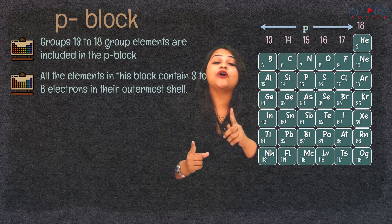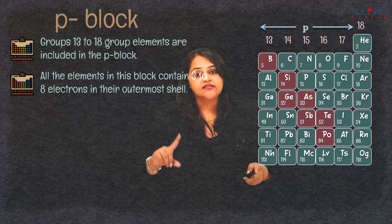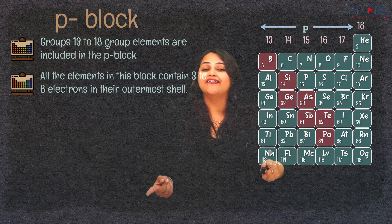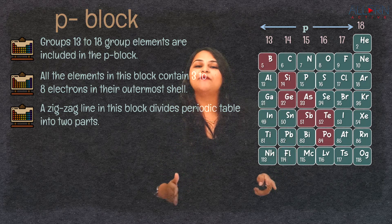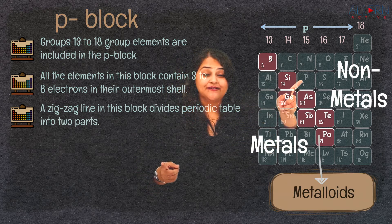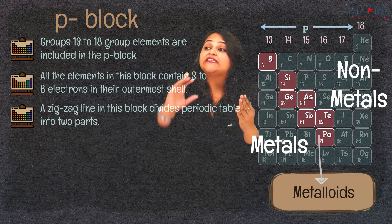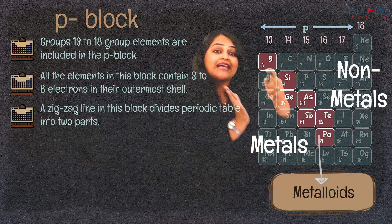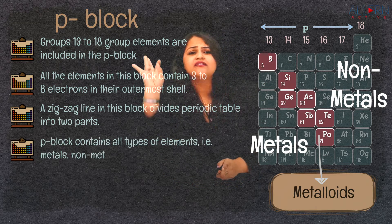The P block contains a great variety of elements — it has metals, non-metals, and the metalloids that divide them in a zigzag manner. A zigzag line divides the P block — and the entire periodic table — into two parts: metals on the left and non-metals on the right. All elements on the left side of the zigzag, including those in the S block and the D block, are metals. The zigzag line elements themselves are metalloids. The P block thus contains metals, non-metals, and metalloids.